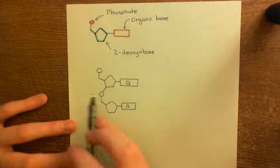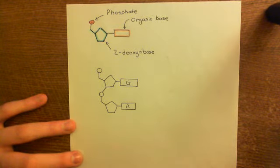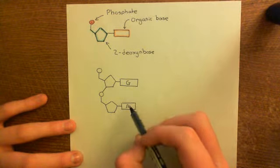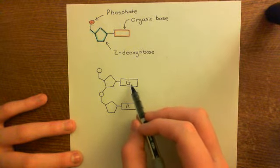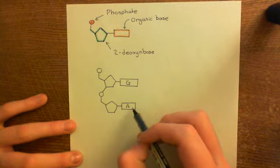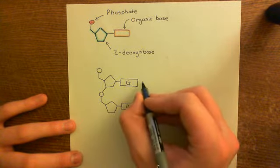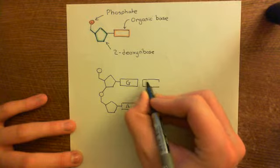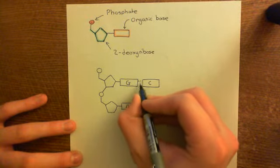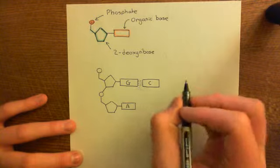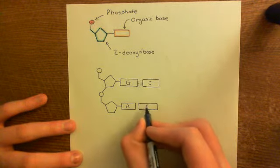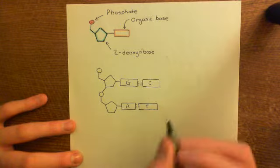That's our piece of DNA as a single strand - we could polymerise this on and continue building the DNA strand. However, this is not how you find DNA within the cell. You should not find single-stranded DNA. Instead, it will be bound to another complementary strand which has the complementary organic base to each of these. The complementary base to guanine is cytosine, and the complementary base to adenine is thymine. There are three hydrogen bonds between guanine and cytosine and two hydrogen bonds between adenine and thymine.